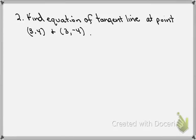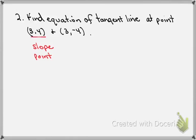Now that I know dy/dx is equal to minus x over y, I've been asked to find the equation of the tangent line at the points (3, 4) and (3, -4). I'm going to do one of them for you, and then you can do the other by yourself. In order to find the equation of any line, we're going to need the slope, and we're going to need a point. We've been given a point, which is (3, 4), and we just need to remember the slope is a derivative.